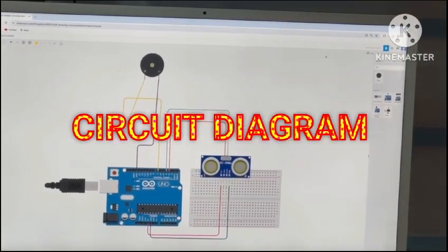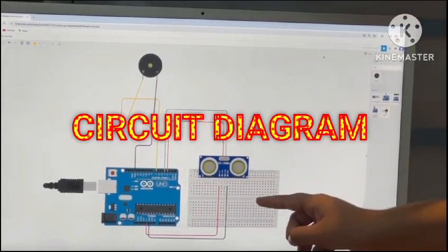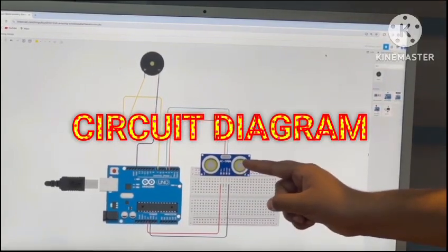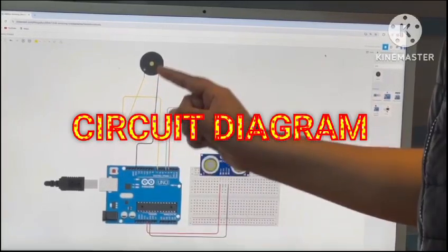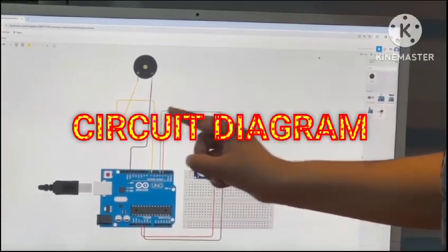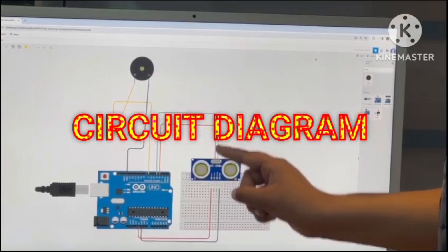Now the components I am going to tell you: this is the breadboard, this is the ultrasonic sensor, this is the Arduino UNO board, this is the USB cable and this is the buzzer. These are the jumper wires which are used all over the circuit.